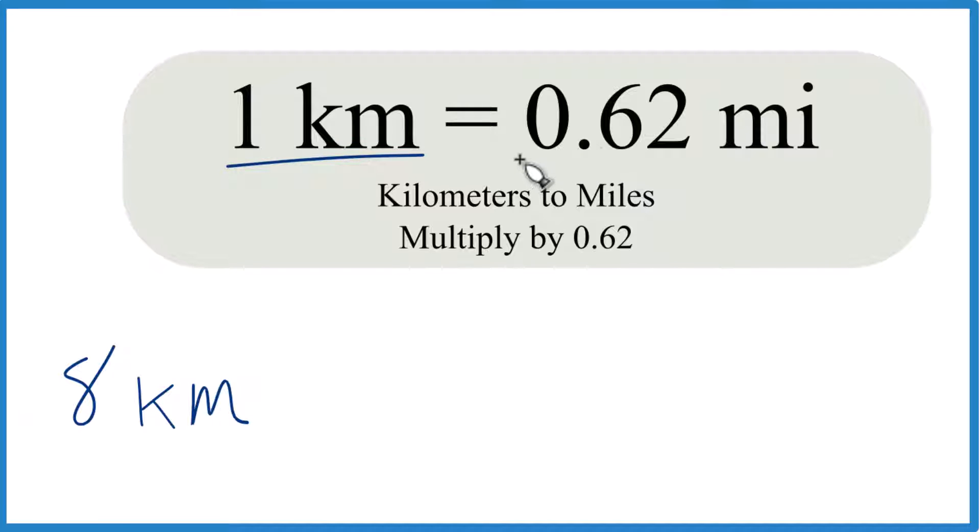One kilometer equals 0.62 miles. This is rounded. The actual number is 0.62137, and some people just use 0.6 so they can do it in their head.